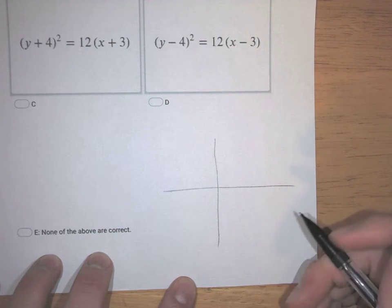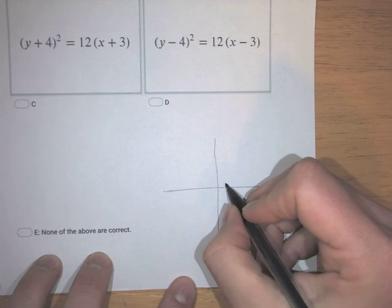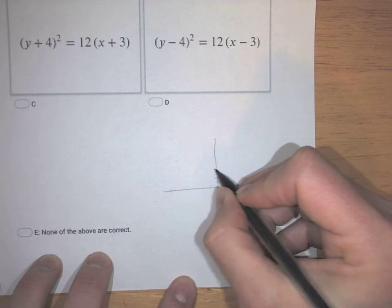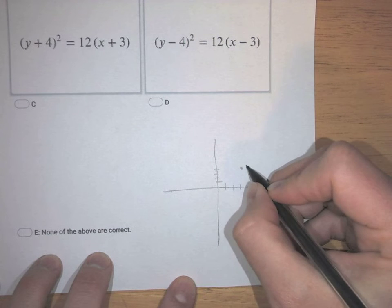and I'm going to just plot my vertex and my focus. So the vertex is at (3,4), so 1, 2, 3, 1, 2, 3, 4. Okay, I'm going to label that V.